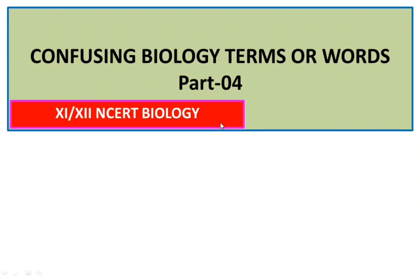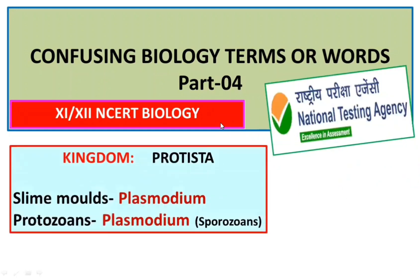We are going to talk about two terms. We are going to look at questions about Kingdom Protista — specifically slime molds, plasmodium, and protozoans.